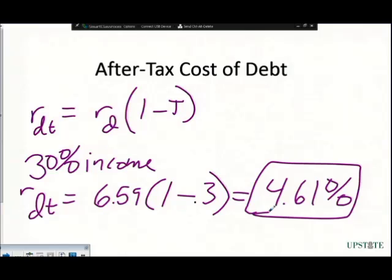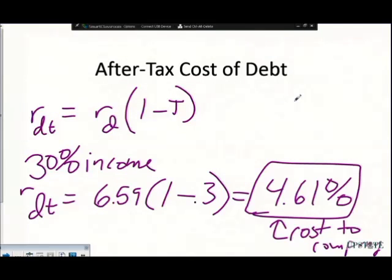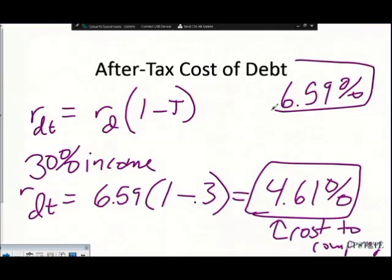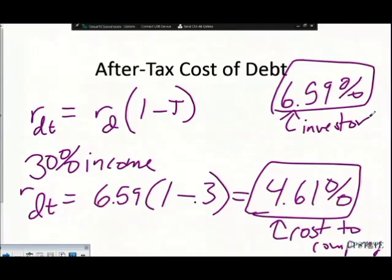Just to clarify: the benefit to the investor is that the investor is still getting 6.59% — the investor receives this rate — but the tax write-off accounts for that difference on the company's side.